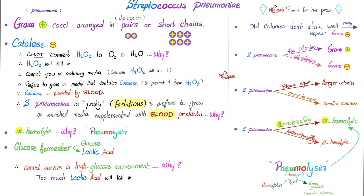Eventually, old colonies will undergo O2 lysis because they have autolysin known as amidase. This amidase causes lysis in the center, and when you see a dimple in the center of a colony, you should suspect Streptococcus pneumoniae. It likes blood a lot — on blood agar, it gives larger colonies. It does not like chocolate agar as much because it lacks robust catalase, so it grows with smaller colonies on chocolate. In an aerobic environment it gives alpha hemolysis, but in an anaerobic environment it can give beta hemolysis.